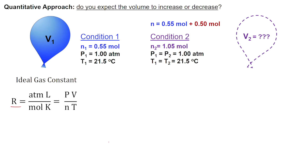We know that our R is constant. So, even if conditions change, P times V over N times T must always equal R. So, we can set up this changing conditions equation.